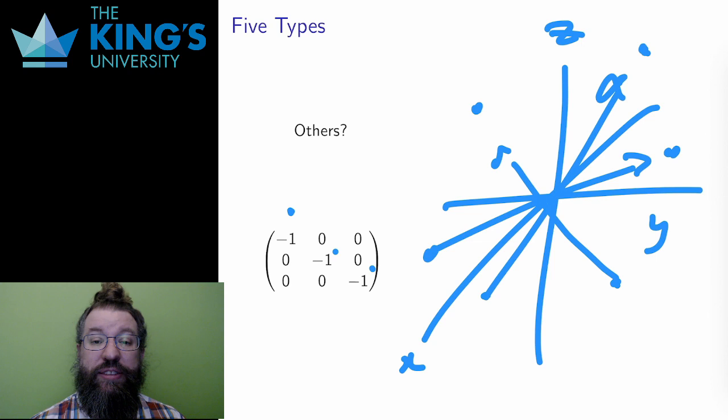This is the transformation that takes, say, a beach ball, deflates it, turns it inside out, and inflates it again. Everything goes to the point directly opposite the origin. This is neither a reflection or a rotation, but some other kind of transformation.